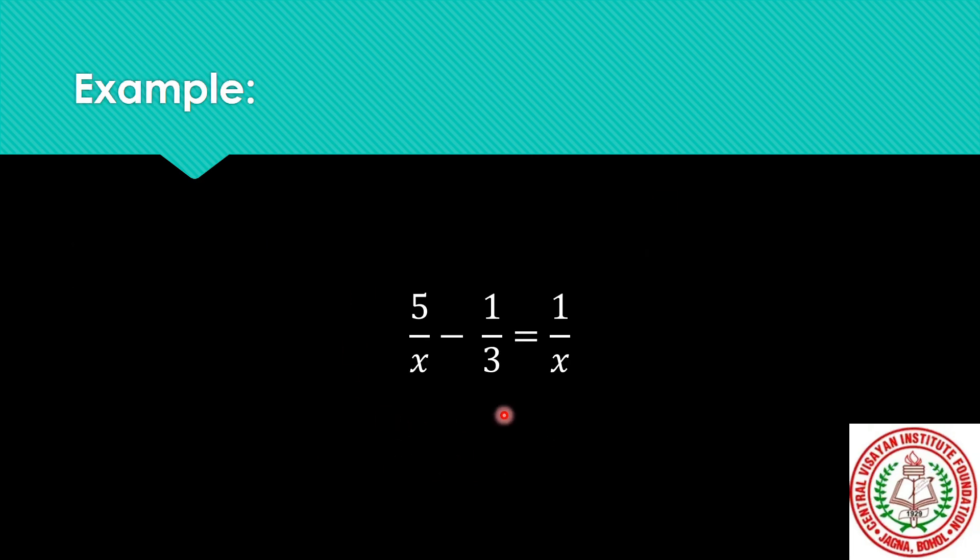So we have here an example of a rational equation. As you can see, rational functions appear on both the left side and right side of the equation. Now, when asked to find the value of x in a rational equation, a lot of ways can be done.